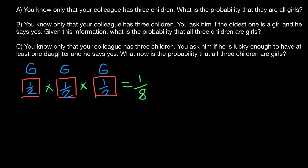Now let's read the second question. You know only that your colleague has three children. You ask him if the oldest one is a girl, and he says yes. Given this information, what is the probability that all three children are girls? Let's draw three boxes representing the three children. We know for sure that the first child is a girl, so the probability is 100% — one over one, which equals one.